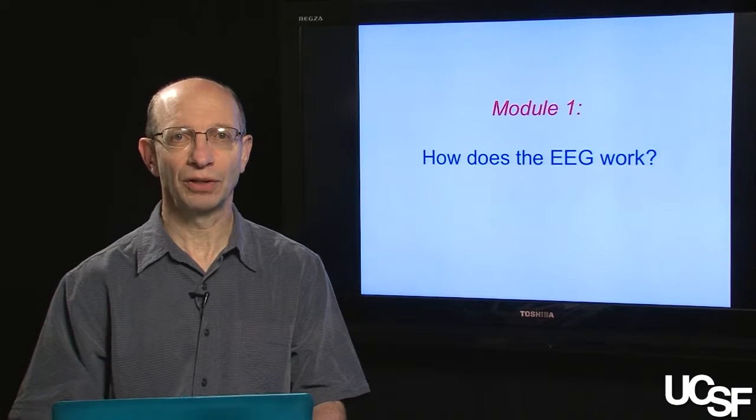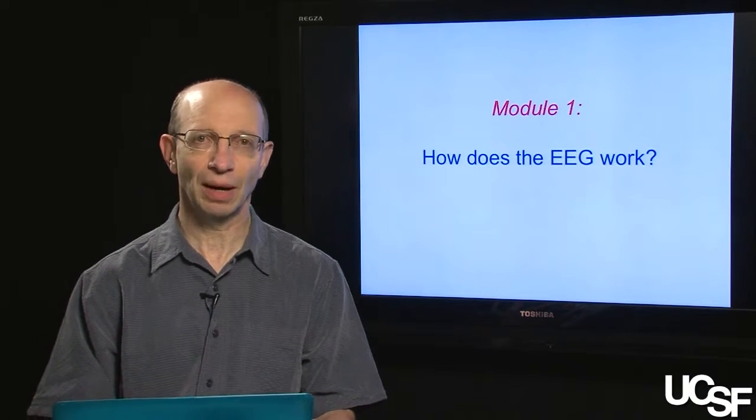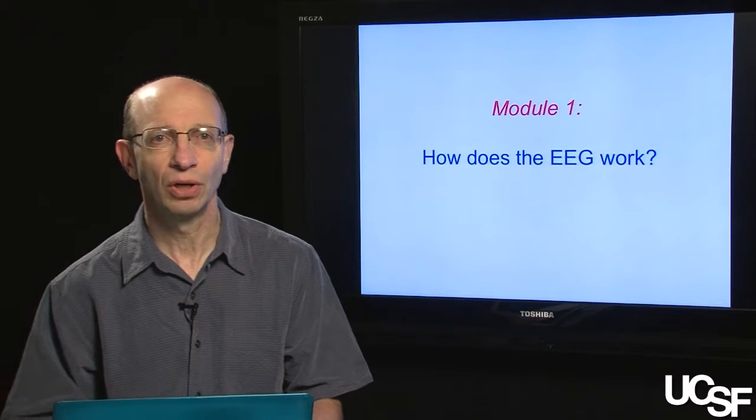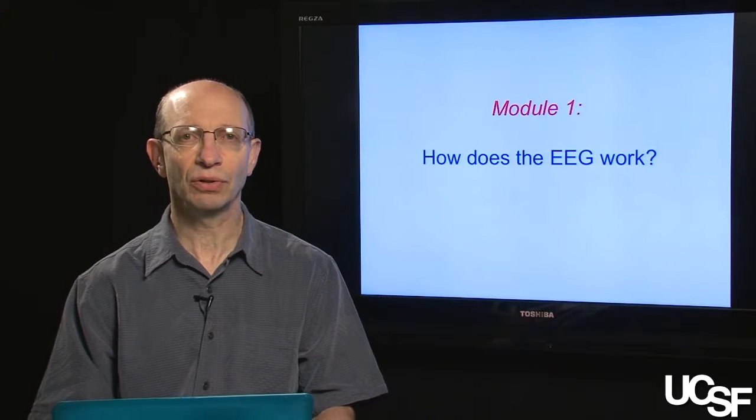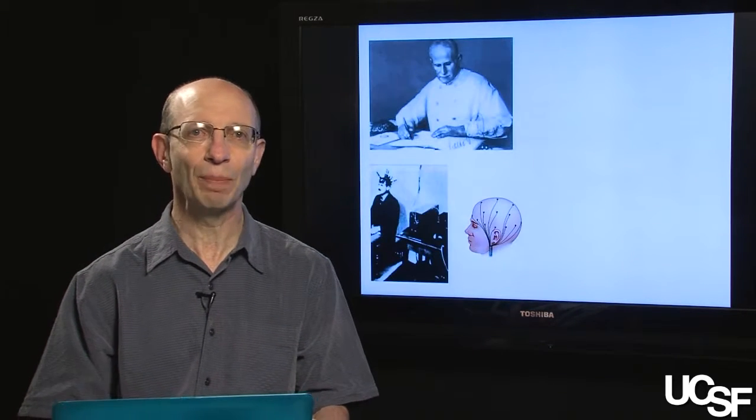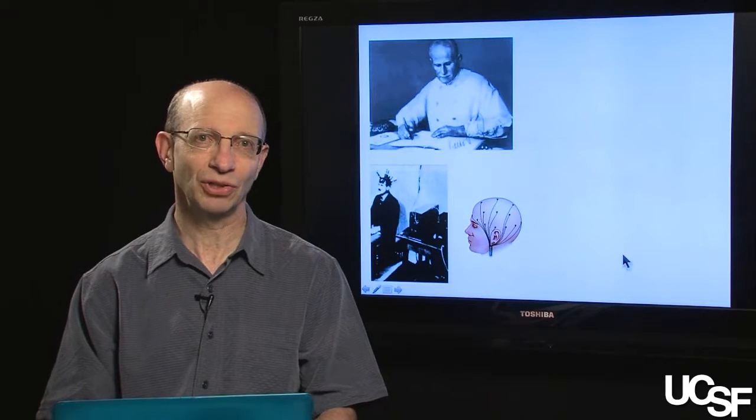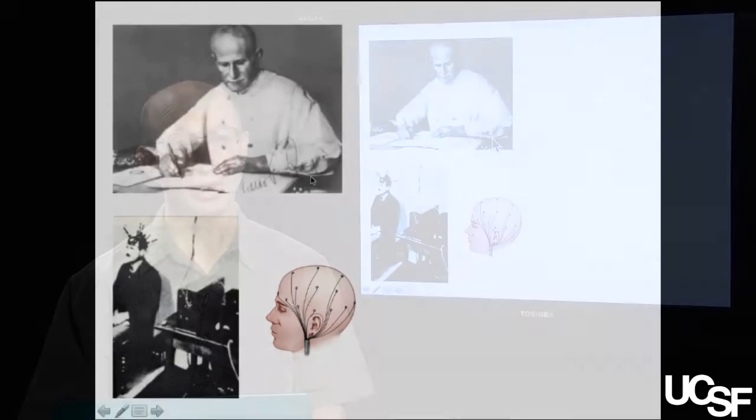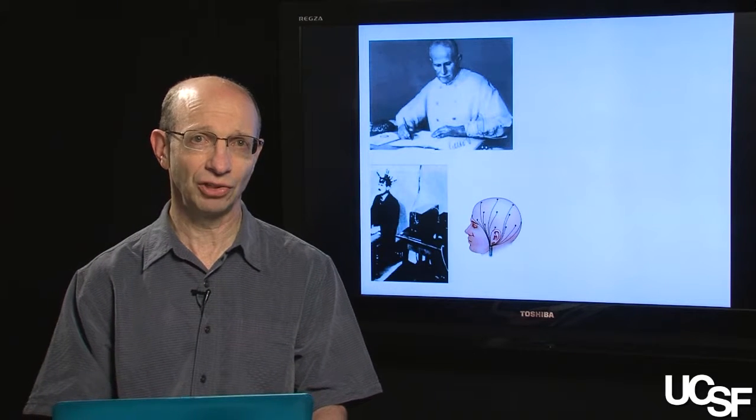This is the first of five modules that we're going to use to cover the topics of seizures and epilepsy. In this first module, we're going to discuss how the electroencephalogram, or the EEG, works. So to begin, we actually have to go back in history. This is a picture of Dr. Hans Berger, a famous German physiologist who was actually the discoverer of the EEG.